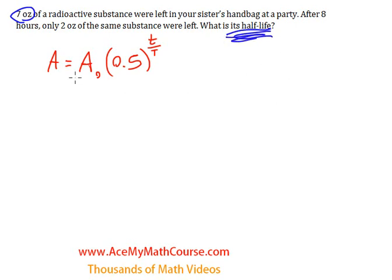So here's the half-life formula and I want to make sure that everybody really understands every element that we have here. This right here is the final quantity, this A. This A₀ represents the initial quantity.